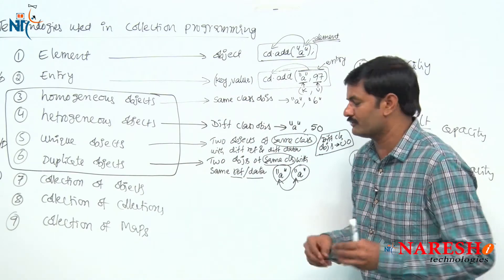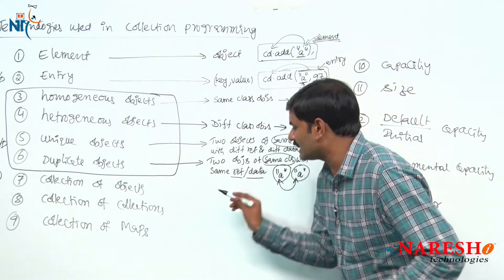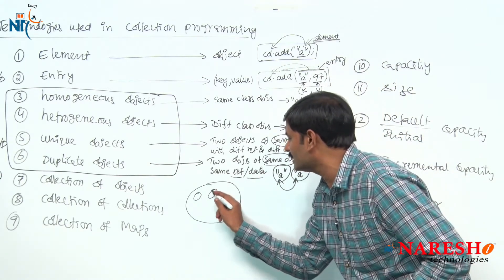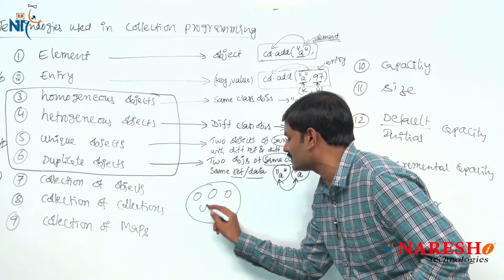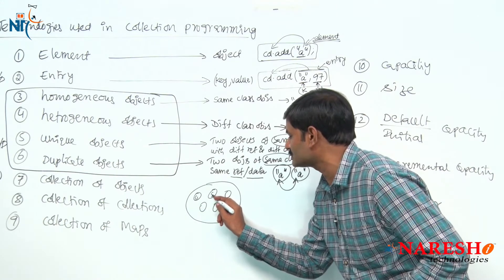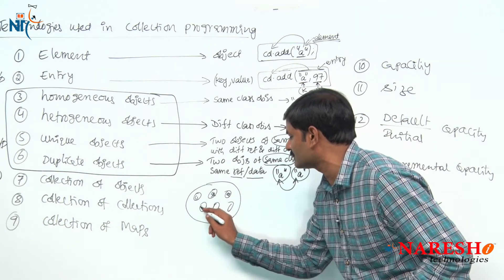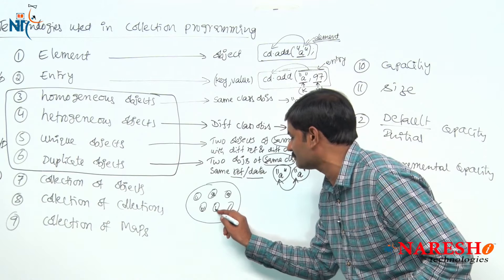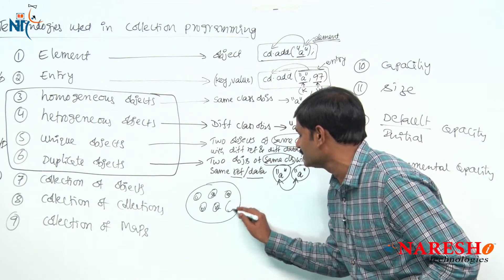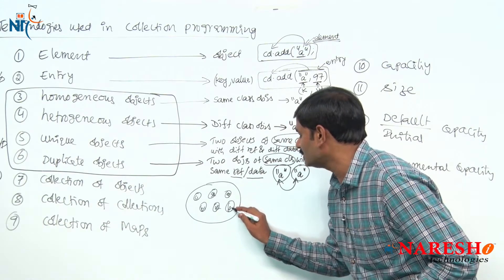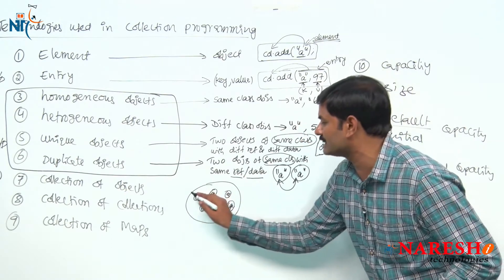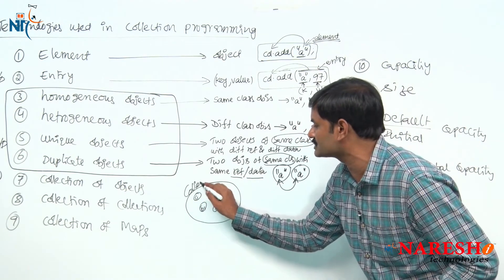A quick understanding: a collection object that contains regular individual objects — student object 1, student object 2, employee object 1, bike object 1, bike object 2, bank account object — when individual objects are stored directly, then it is called a collection.